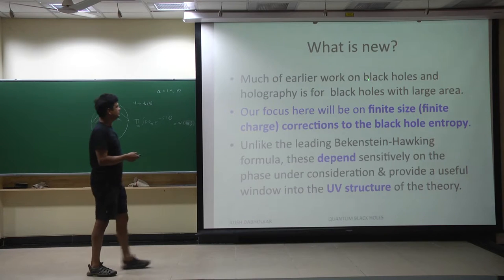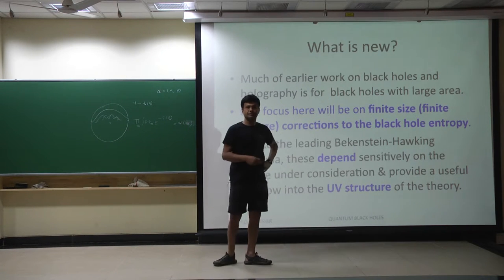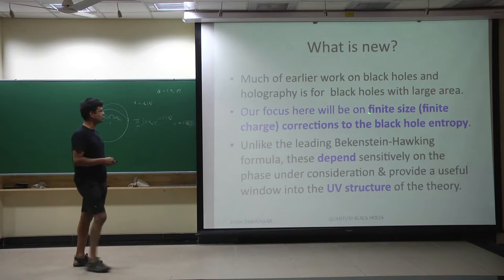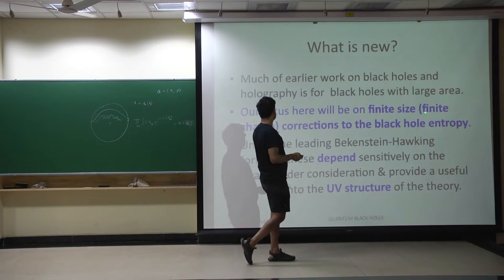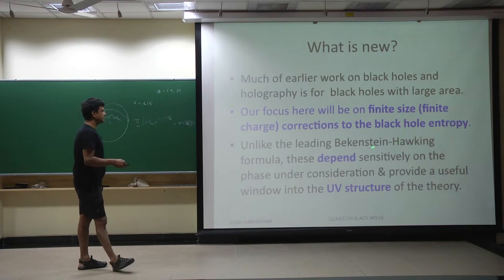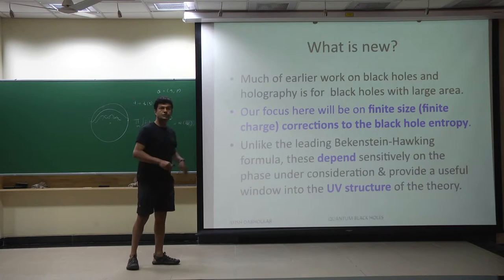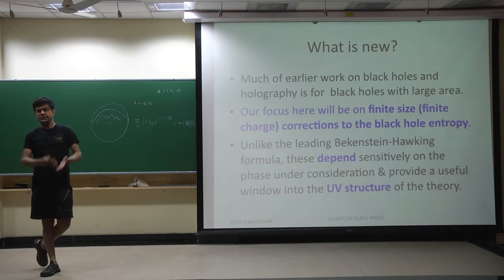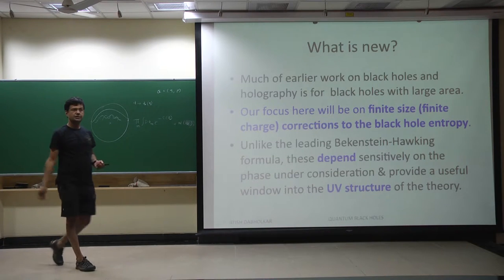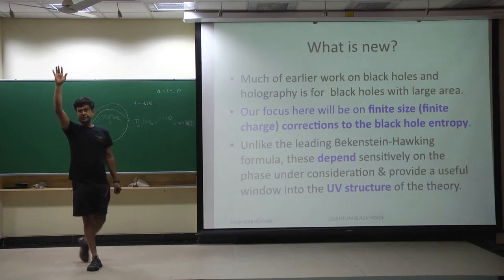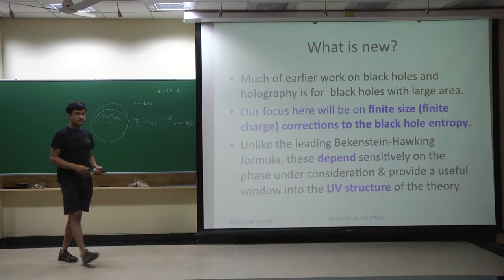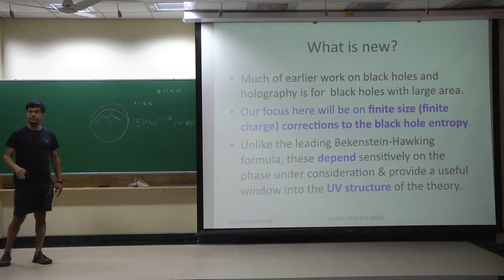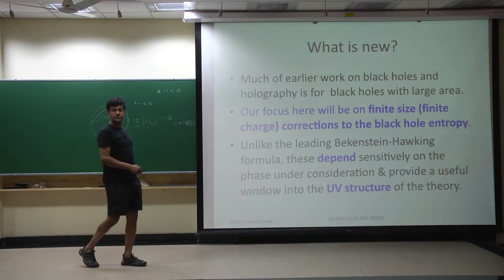What is new in what I'm going to describe today and tomorrow? Our focus will be on finite-size effects — finite charge corrections to the black hole entropy — which, unlike the leading Bekenstein-Hawking formula, depend on whether you have an internal T6 or a Calabi-Yau manifold, or what kind of D-brane. These are ultraviolet properties of the theory. If you have some wrapped D-brane in a Calabi-Yau, its mass is much bigger compared to the ultraviolet cutoff — the string scale. So by integrating out these fields at energies below the string scale, you get information about the ultraviolet structure of the theory.